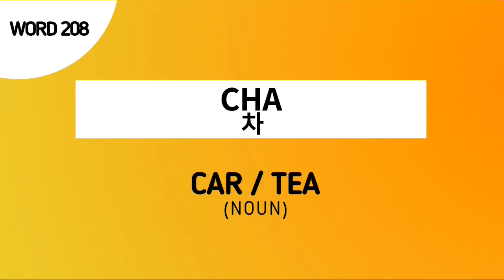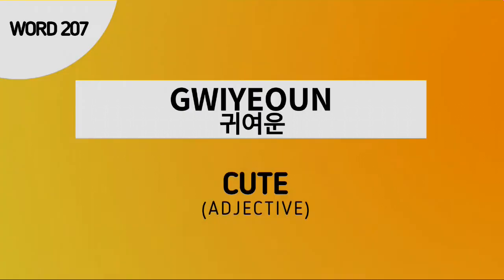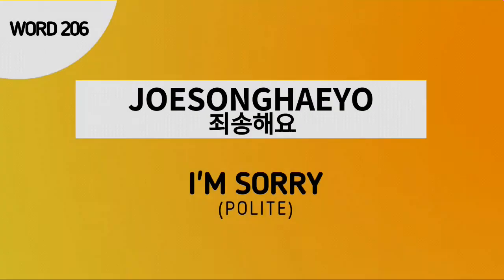Word number 208 is CHA, which means CAR or TEA. Word number 207 is KION, which means CUTE. Word number 206 is CHUESUNGAYO, which means I'm sorry in a polite manner.